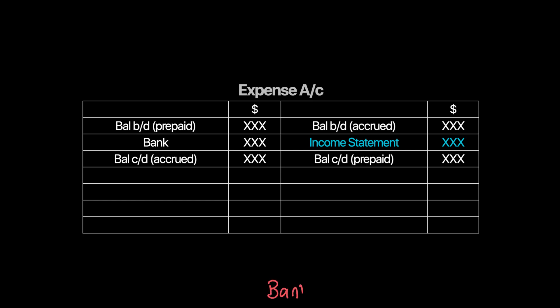For the bank entry: when an expense is paid, the bank account is credited and the expense account is debited, since the nature of an expense account is debit. We record the amount of expense paid on the debit side. Using this account, we find the missing figure — the income statement figure — which is the actual amount of expense incurred in the year. Everyone should learn how to draw this expense account to calculate the actual expense for the income statement.